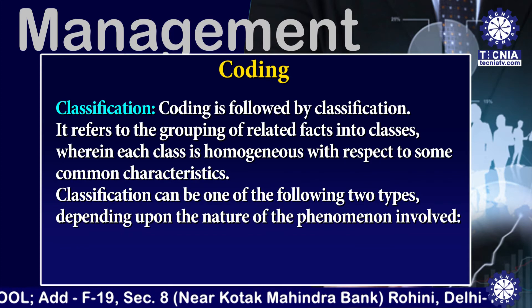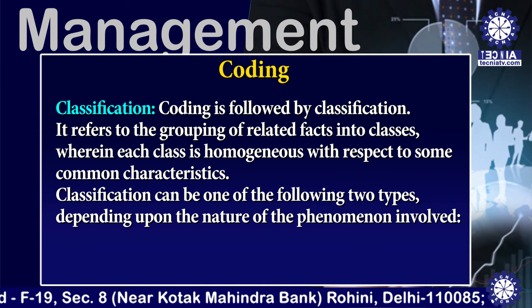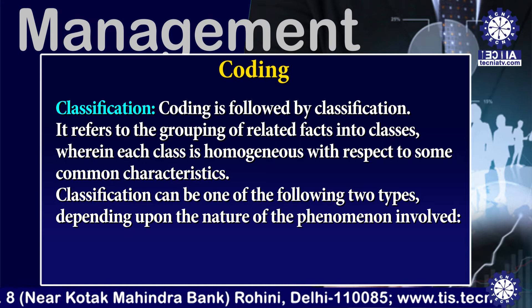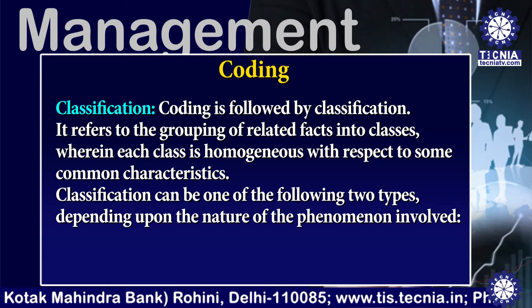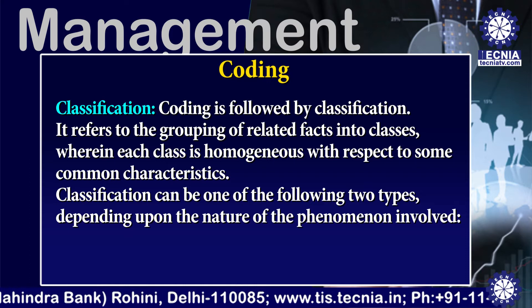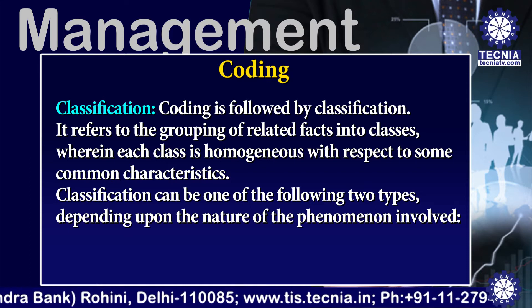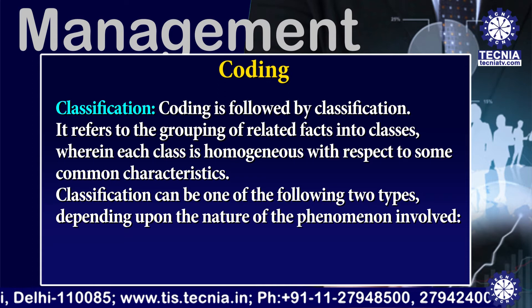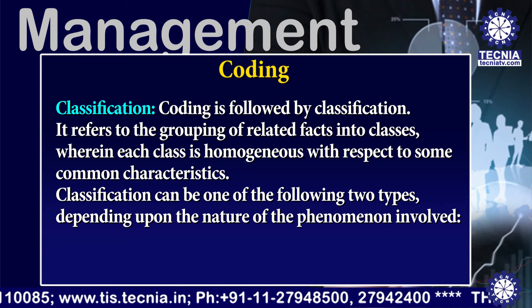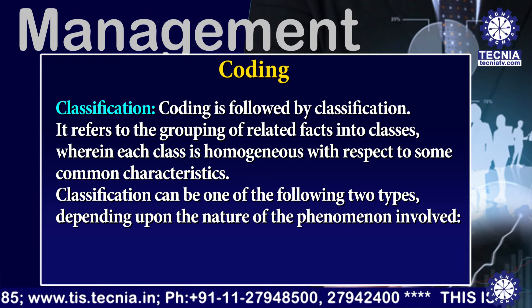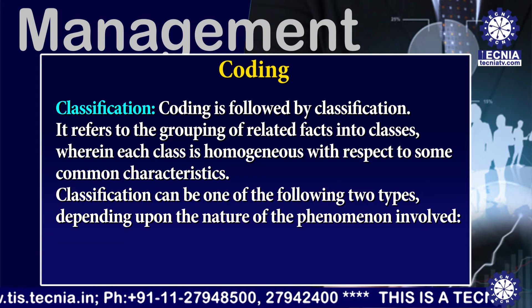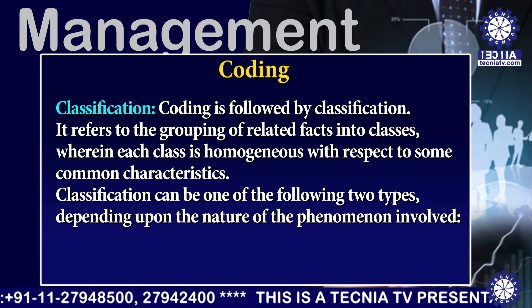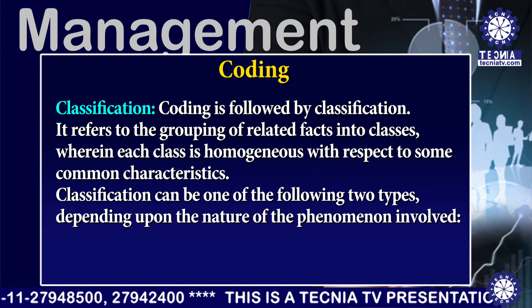The second term is classification. Coding is followed by classification. It refers to the grouping of related facts into classes, wherein each class is homogeneous with respect to some common characteristics. Classification can be one of the following two types depending upon the nature of the phenomena involved.